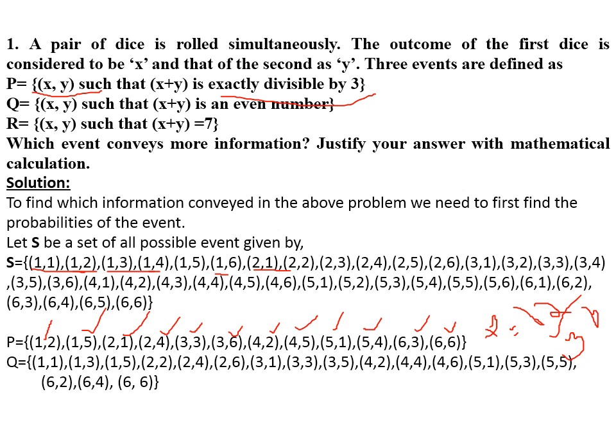For event Q, we list pairs of dice where x+y is an even number. For example, (1,1) gives 1+1=2, so we pick (1,1), (1,3), (1,5), and so on. Counting all such outcomes we get 18 favorable pairs. So the probability of event Q is 18/36.